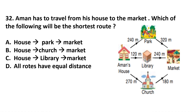Question number 32. Aman has to travel from his house to the market. Which will be the shortest route? The first route (house to market directly) is 240 plus 320 = 560 meters. The second route (house to library to market) is 120 plus 240 = 360 meters.